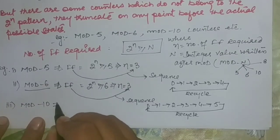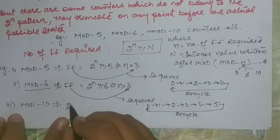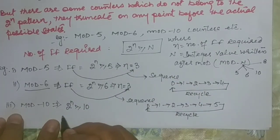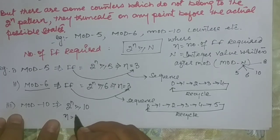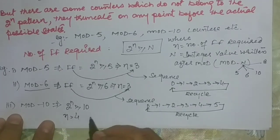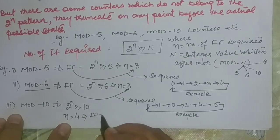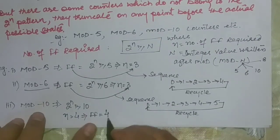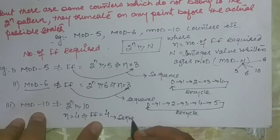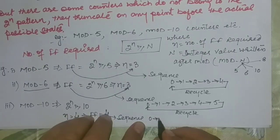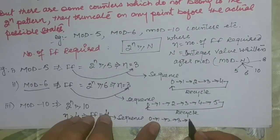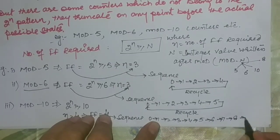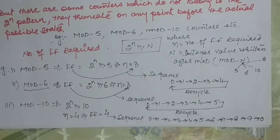For mod-10: applying 2^n ≥ 10, we get n = 4, so 4 flip-flops are required. The sequence will be 0, 1, 2, 3, 4, 5, 6, 7, 8, 9, and back to 0.